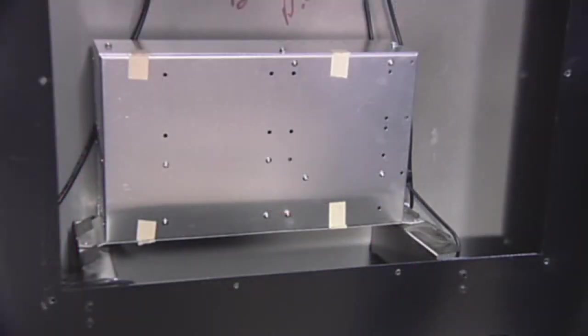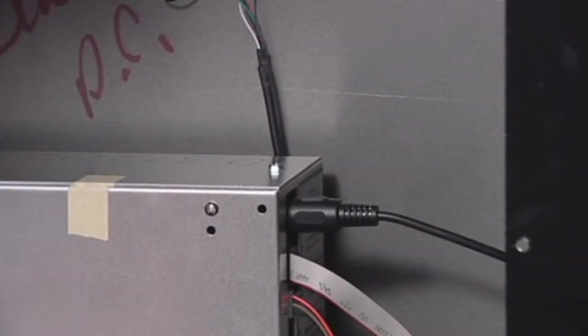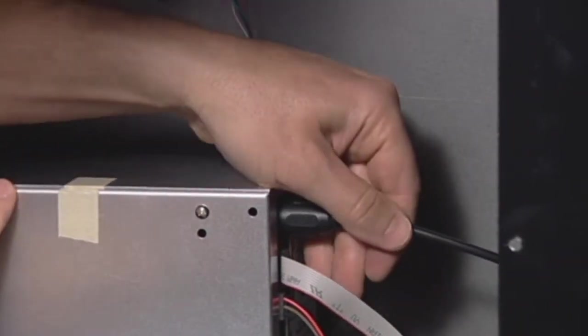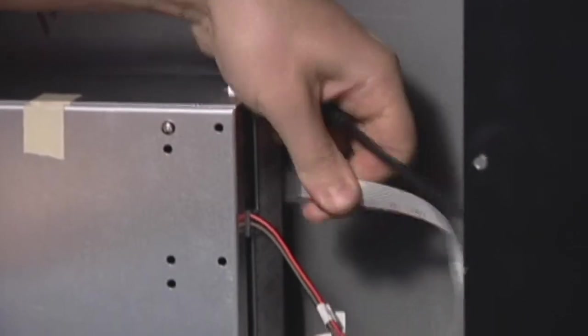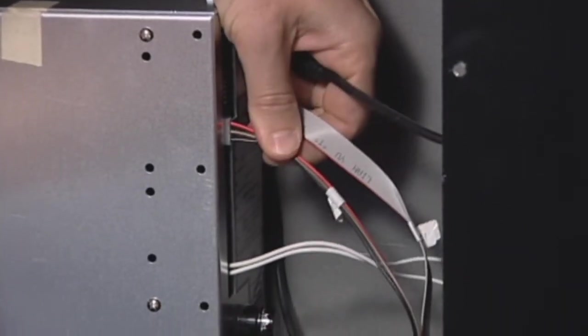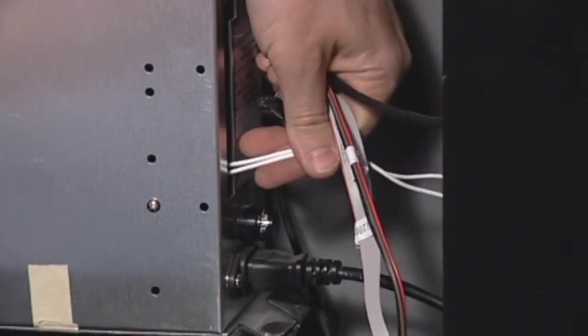Now that you have full access to the module, carefully remove the cables attached to the module. Use a digital camera or draw a diagram so you can reattach each cable connected to the module correctly.